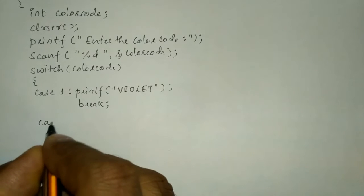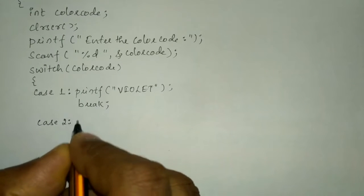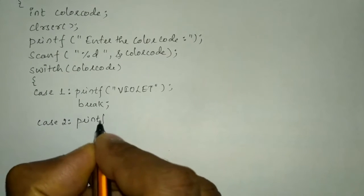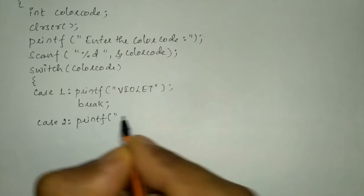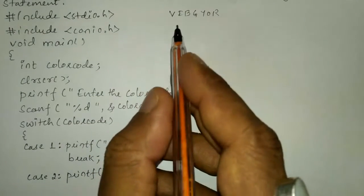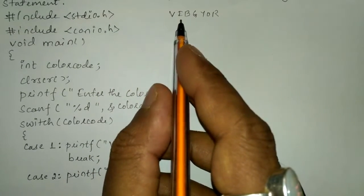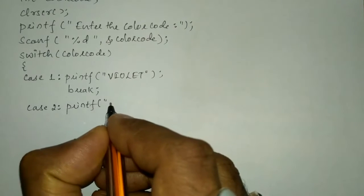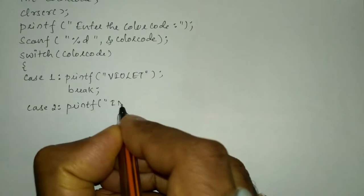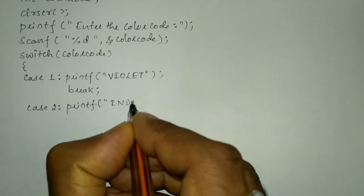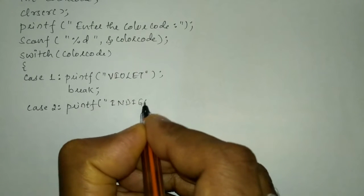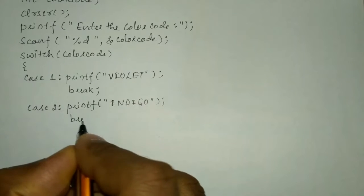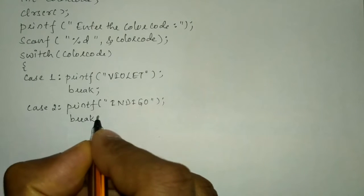Next, case number two — printf statement. After violet we have indigo, so in double quotation marks we write 'indigo' and put a semicolon. Then we write the break statement.